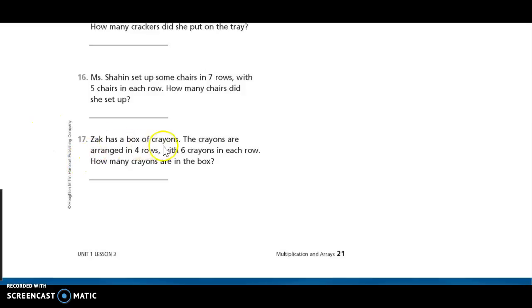Number 17. Zach has a box of crayons. The crayons are arranged in four rows with six crayons in each row. How many crayons are in the box? Pause the video to solve this problem.